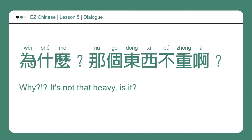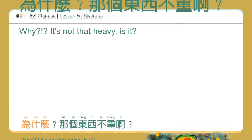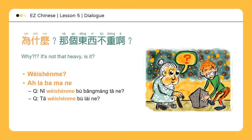为什么？那个东西不重啊。Why? It's not that heavy, is it? 大巴 didn't realize his behavior was impolite, so he asks why. If we want to soften the tone of 为什么, we can add 啊, 啦, 吧, 吗, or 呢 to the end of the question.